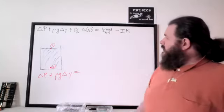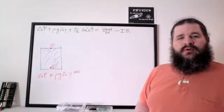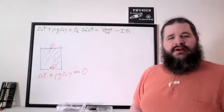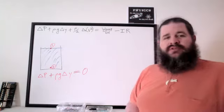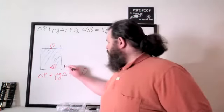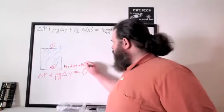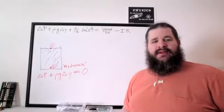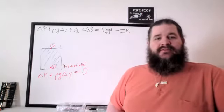There's no pump, so we can ignore that. And even though the tank might have resistance, there's no current, so we can ignore the IR term. So we just have delta pressure plus rho g delta y equals zero. This is the simplified Bernoulli equation for any situation where the fluid is not moving and there's no pump — usually called hydrostatic. Hydro meaning water, but more generally any fluid, and static meaning not moving.